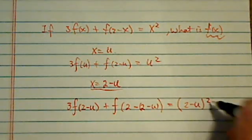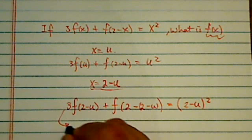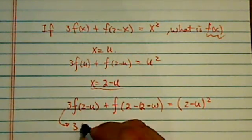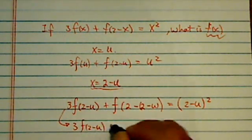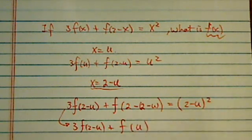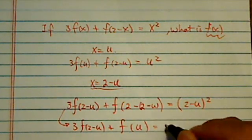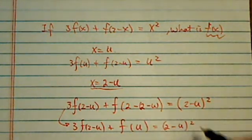It's (2-u)². This one can be simplified as 3f(2-u) + f(u), what do you know, u comes back, is equal to (2-u)².